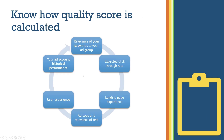Let's move on and talk about how quality score is calculated. Your quality score is dependent on many factors, some of which are listed here. The first one is relevance of your keywords to your ad group, expected click-through rate, landing page experience, your ad copy and relevance of text, user experience, and your ad account historical performance. These are some of the most important factors that are going to be taken into consideration while calculating your quality score.